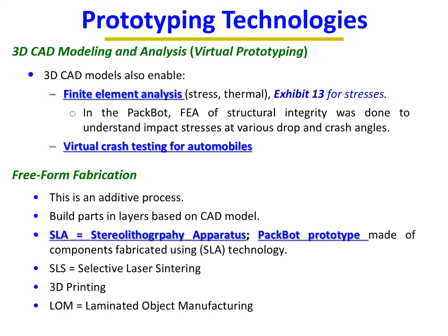The second major technology is free-form fabrication — an additive manufacturing process that builds parts in layers based on CAD models. A simple analogy is plywood: a one-inch-thick table is made of many thin 2mm layers glued together. Similarly, free-form fabrication builds up layers to create a physical prototype.